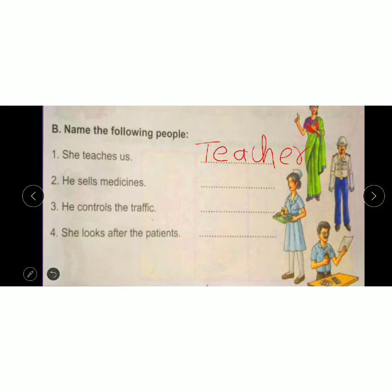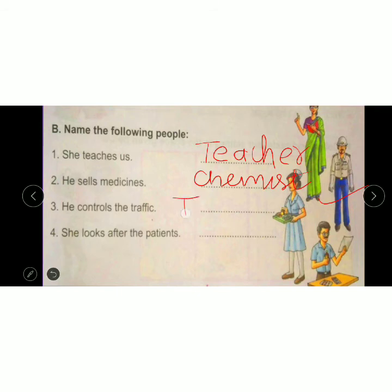A person who sells medicine is known as a chemist. Next: he controls the traffic. We have learnt this in fill in the blanks — the answer is traffic police. He controls the traffic — traffic police. So write 'traffic police'. A picture of traffic police is also given.